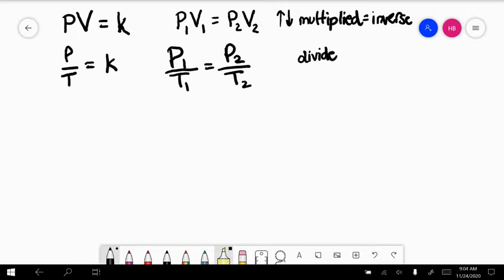So the variables are divided by each other, therefore they are directly related. What directly related means is one goes up, the other one will respond by going up also, and they will always equal this constant.